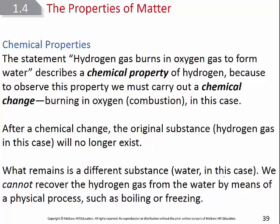Chemical properties involve a chemical change that changes the identity of the substance. For example, you could measure the temperature at which paper combusts by heating it until it catches fire. That combustion point is a chemical property, and combustion is a chemical change — because at the end, you no longer have paper; it has been chemically changed into a different compound.